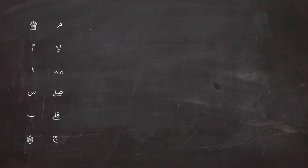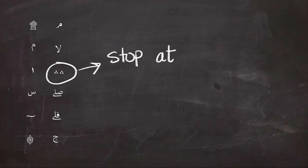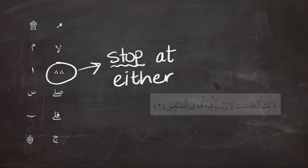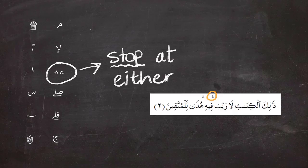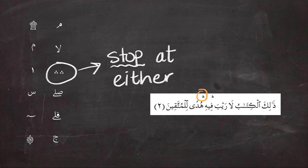The three-dotted symbol means you can't stop at both of them, but you have to stop at one and not the other. In the second ayah of Surah Al-Baqarah, you're allowed to stop at the first one or stop at the second one.